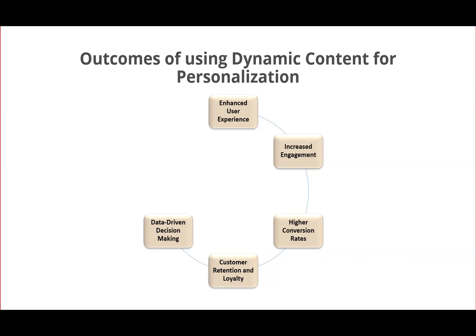The next outcome is data-driven decision making. The use of dynamic content in email personalization, geographic tailoring, or industry-specific engagement provides valuable real-time feedback and analytics. This data helps marketers make strategic decisions, ensuring content remains relevant and impactful, and marketing strategies can be aligned with audience preferences. The last outcome is optimized marketing efforts — dynamic content allows continuous improvement of marketing efforts through data-driven insights, ensuring each email campaign is more targeted and effective, maximizing marketing ROI.